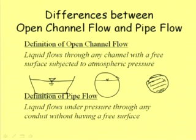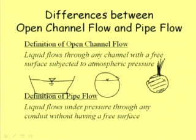The pressure in pipe flow is different from atmospheric pressure. If water is flowing through a pipe and you make a small rupture, water will move out into the atmosphere. Why? Because the pressure inside the pipe is more than the pressure outside. Outside we have atmospheric pressure and inside pressure is higher — that is why water moves out. If you put a pipe there, water will start rising into it. This is the very basic difference between open channel flow and pipe flow.